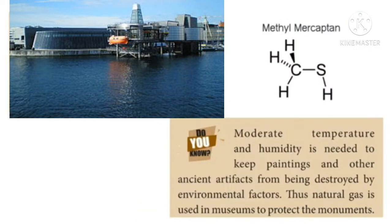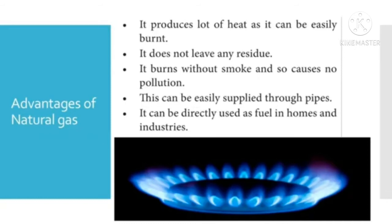Moderate temperature and humidity is needed to keep paintings and other ancient artifacts from being destroyed by environmental factors. Thus, natural gas is used in museums to protect the monuments. The advantages of natural gas are: it produces a lot of heat as it is easily burnt, it does not leave any residue, it burns without smoke and so causes no pollution, and it can be easily supplied through pipes and used directly as fuel in homes and industries.